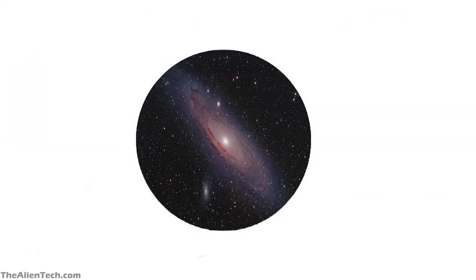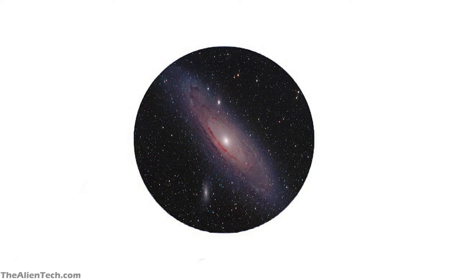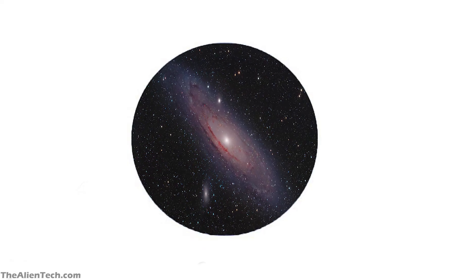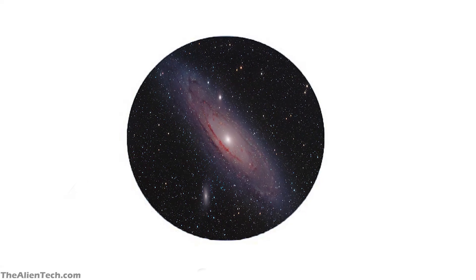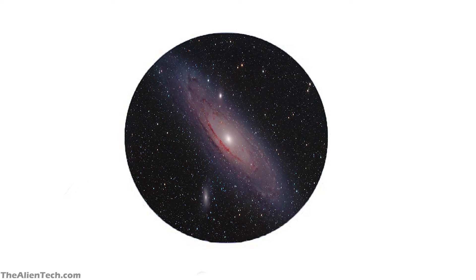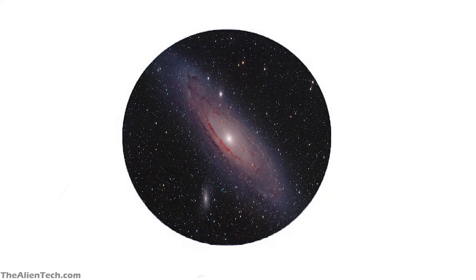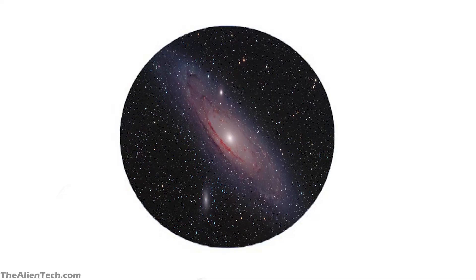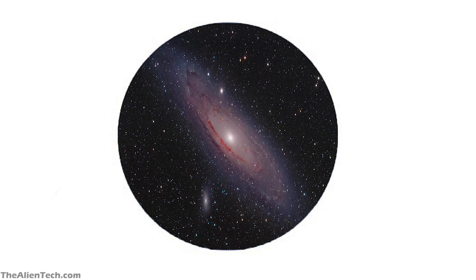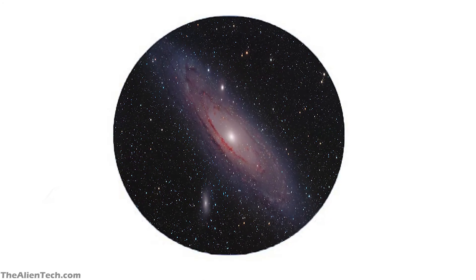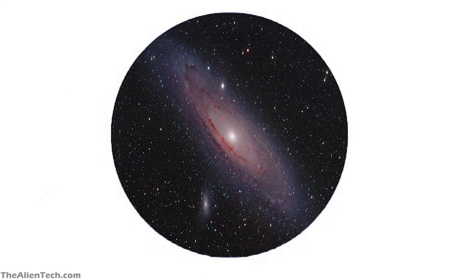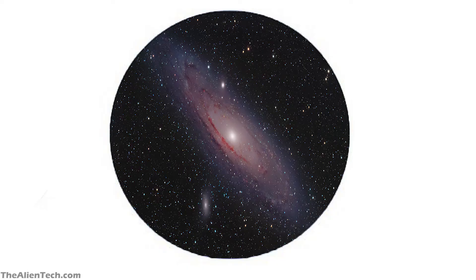When you have a short focal length, the field of view of your telescope is wide. A wide field of view is good for observing deep space objects, where you need to see a large portion of the sky to view objects like galaxies or nebulae.